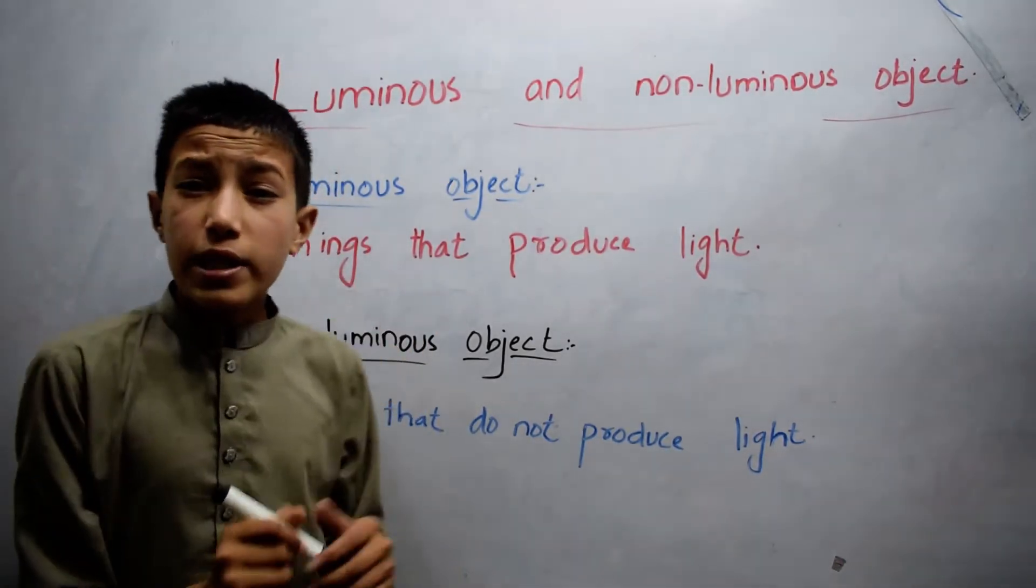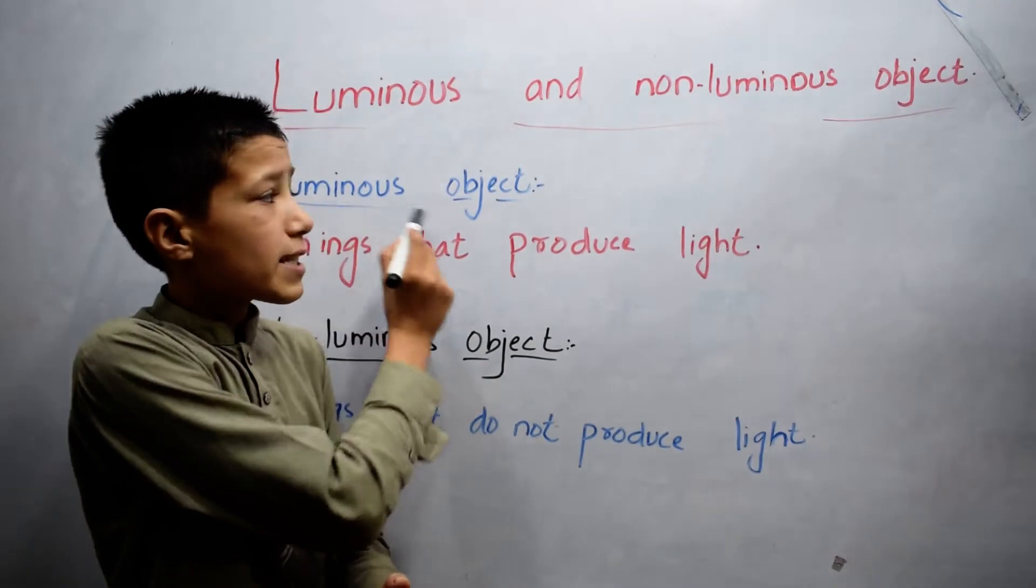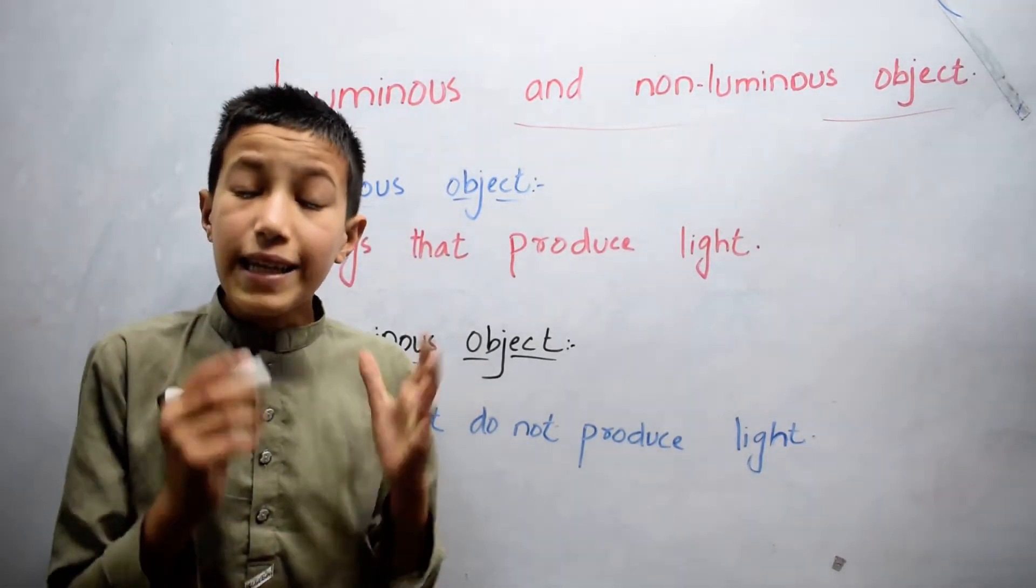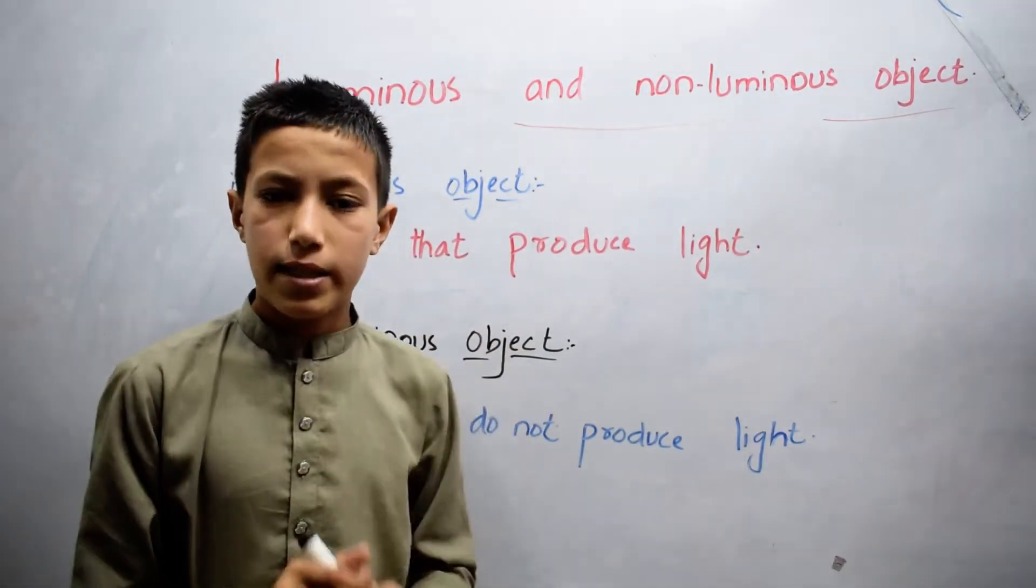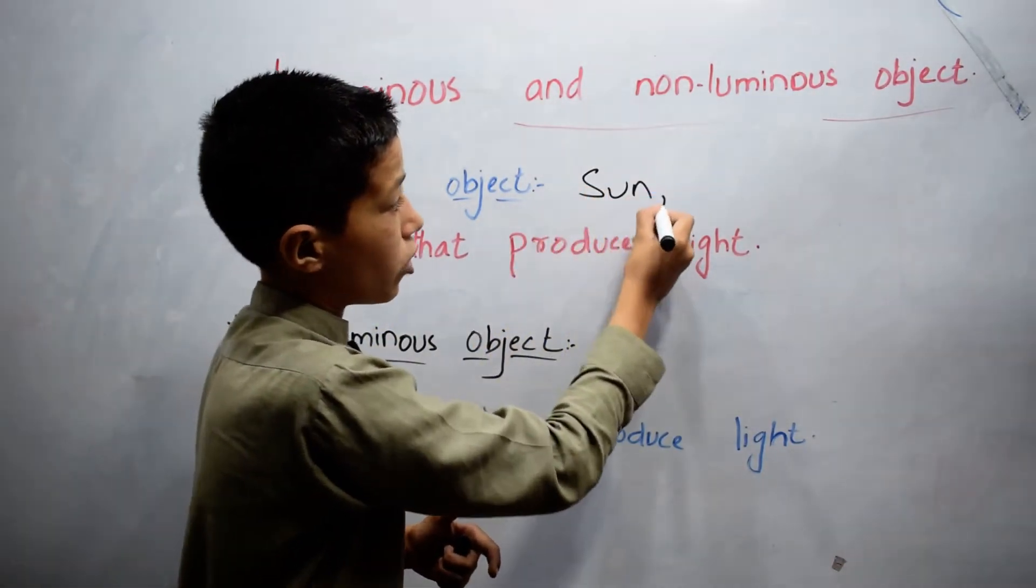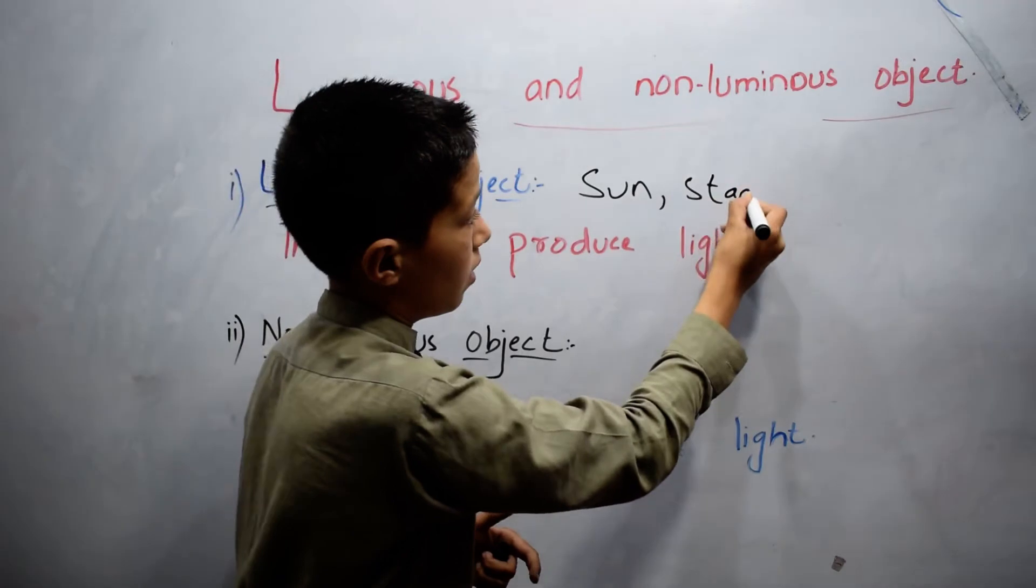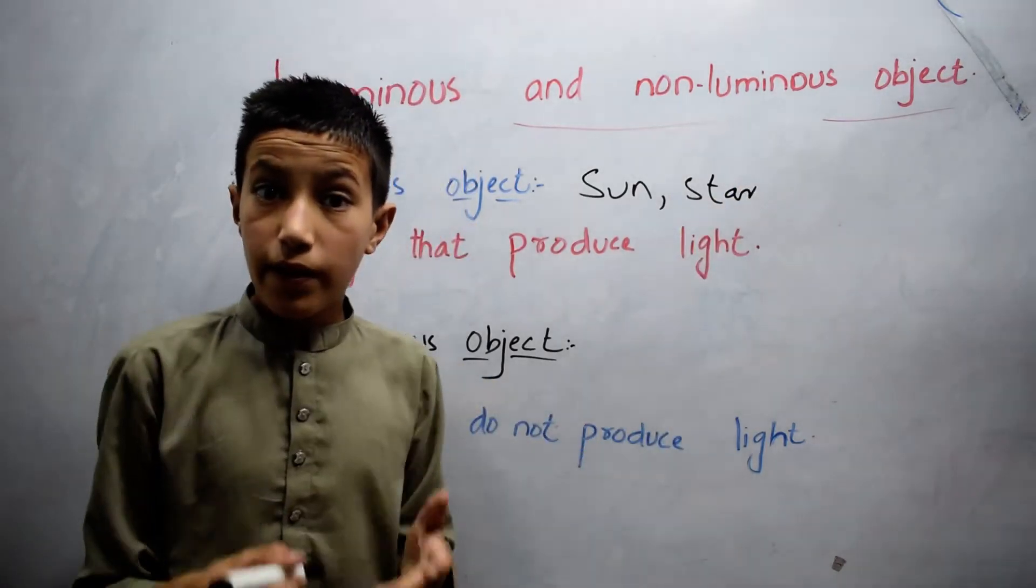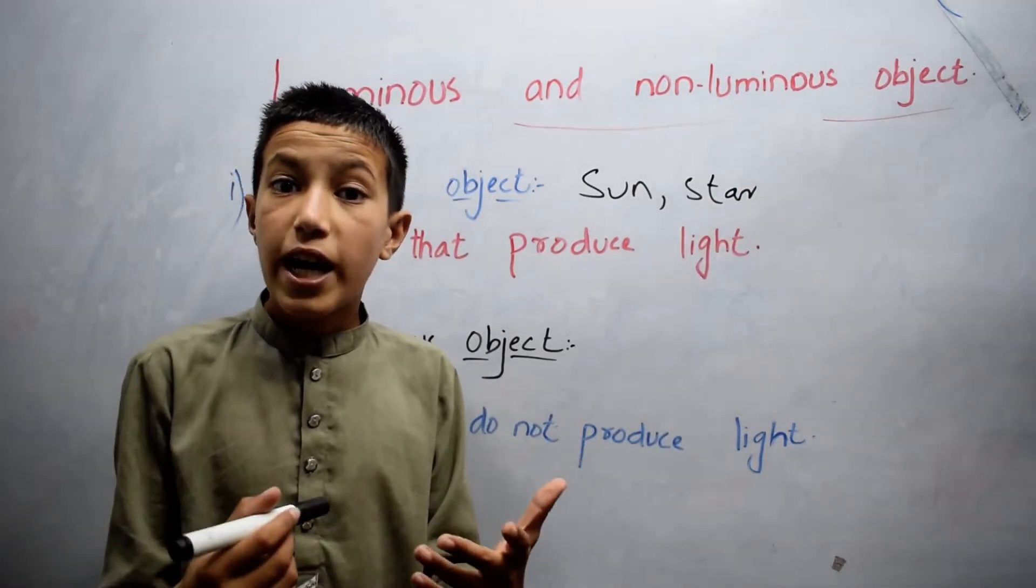Things that produce light are called luminous objects. For example, sun, star, electric bulb, candle, torchlight, etc.